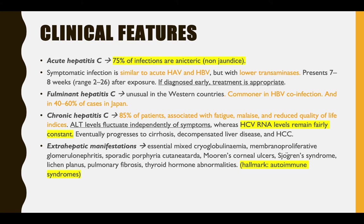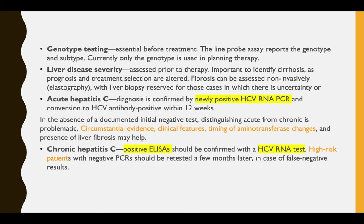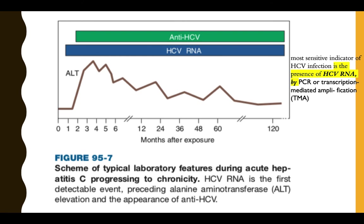For HCV serology, you detect antibody to the recombinant HCV peptide and HCV RNA. Genotype testing is essential for treatment, as certain genotypes respond to different therapies. Acute Hepatitis C is confirmed by newly positive HCV RNA PCR — you have to detect the presence of HCV RNA. For chronic hepatitis, positive ELISAs can be performed and then confirmed with the HCV RNA test. Patients with high risk can be retested a few months later.